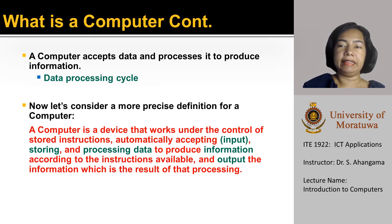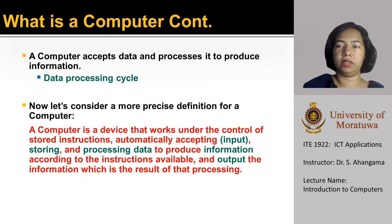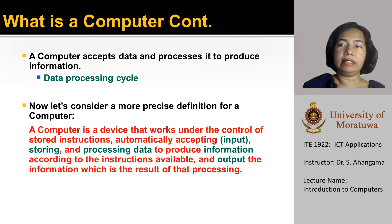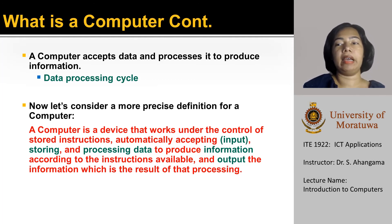Finally, in step five, it controls all the above four steps. Basically, a computer accepts data and processes it to produce information. We call this process the data processing cycle.